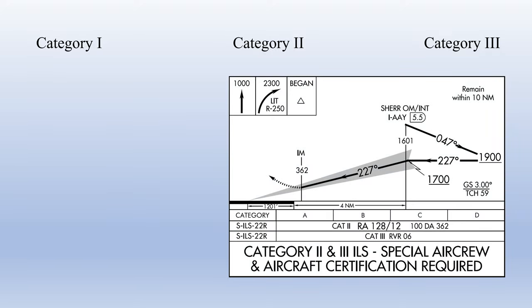There are three different categories of ILS approaches: Category 1, Category 2, and Category 3, often abbreviated Cat 1, Cat 2, and Cat 3. Both Cat 2 and Cat 3 require special equipment, training, and certification, with Cat 3 usually flown with Autoland or a heads-up guidance system, and Cat 2 usually requiring at least a flight director and redundant instruments. These are typically only flown by airliners and advanced business and military aircraft. Cat 1 approaches are available for any instrument-rated pilot and are pretty much the only type of ILS approach that light aircraft can fly, so that will be the focus of this video.